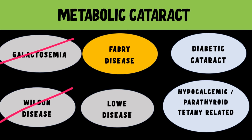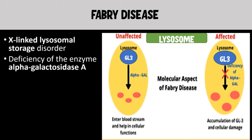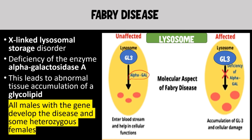Now we are moving forward to Fabry's disease. Fabry's disease is an X-linked lysosomal storage disorder — specifically X-linked recessive, meaning it affects males more compared to females. The deficiency is of the enzyme alpha-galactosidase A. In the lysosome, the glycolipid GL3 is normally broken down by alpha-galactosidase A; if this enzyme is deficient, there will be accumulation of glycolipid in the lysosomes. All males carrying the gene are going to develop the disease.